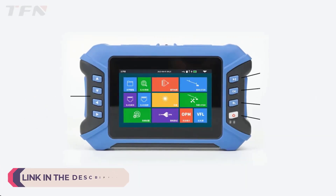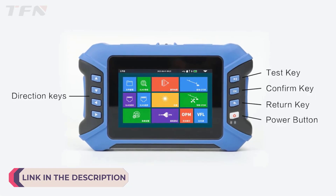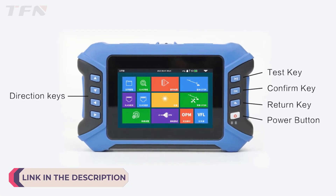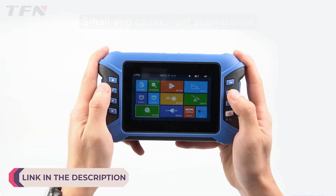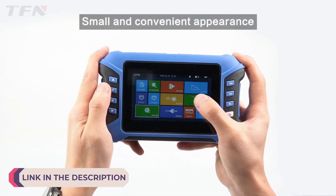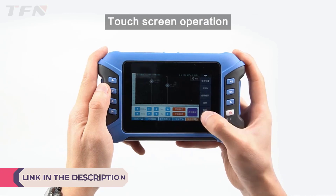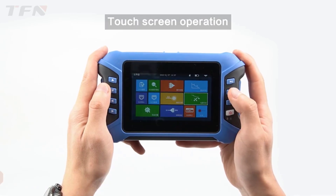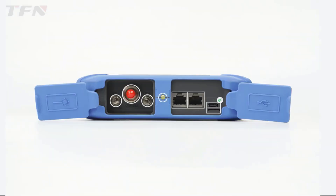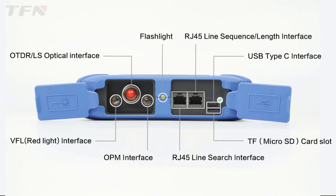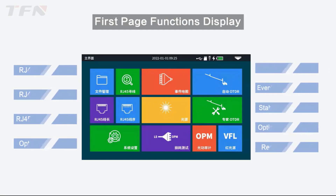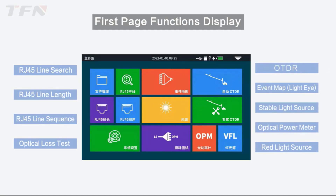An optical time domain reflectometer (OTDR) is a fundamental tool in the realm of optical fiber testing and network maintenance. Its significance lies in its ability to provide precise measurements of various parameters along an optical fiber, offering insights into its integrity, performance, and potential faults.